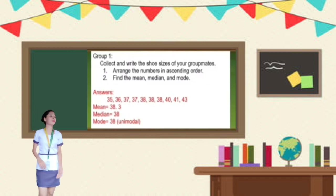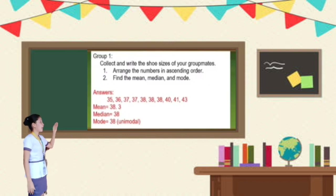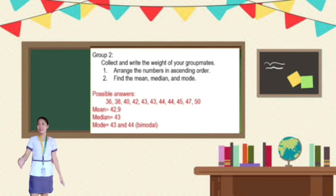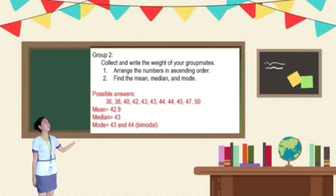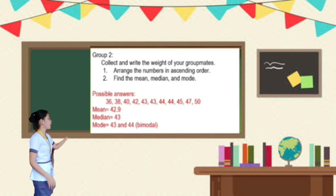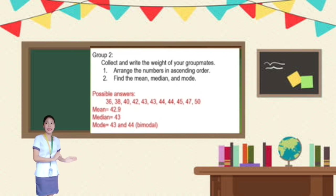Time's up. Can you paste your answers on the board? I will call one representative from each group to present. For group one, Lovely will explain. Group one collected shoe sizes. The mean is 38.8, the median is 38, and the mode is 38 — it is unimodal. Very good, group one. For group two, Jay-Anne will explain. Group two collected the weights of their group mates. The mean is 42.9, the median is 43, and the mode is 43 and 44 — that is bimodal.